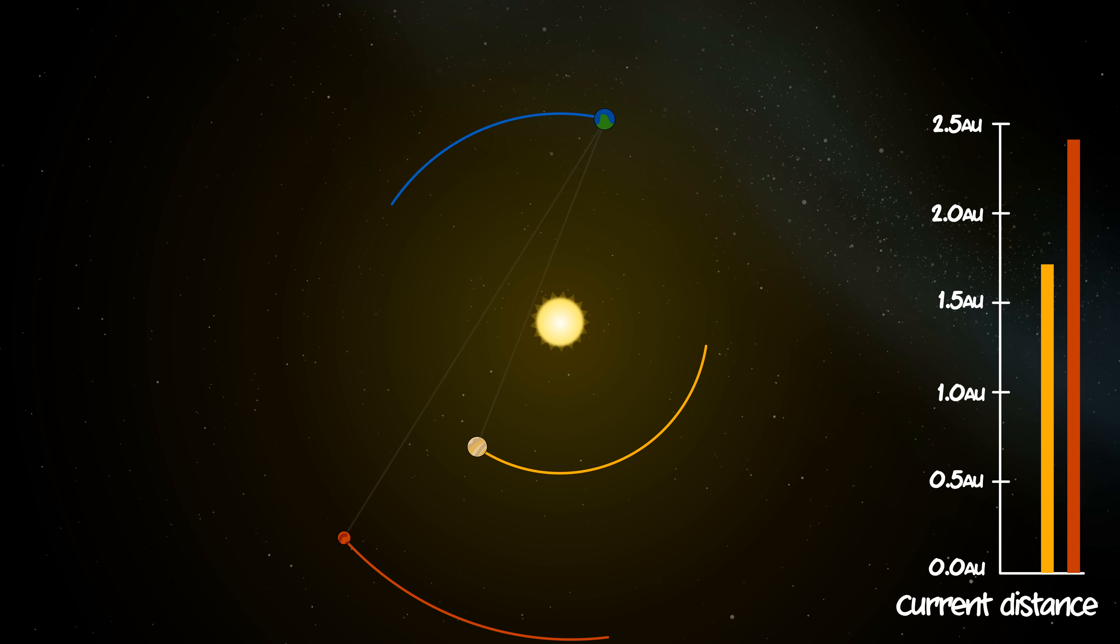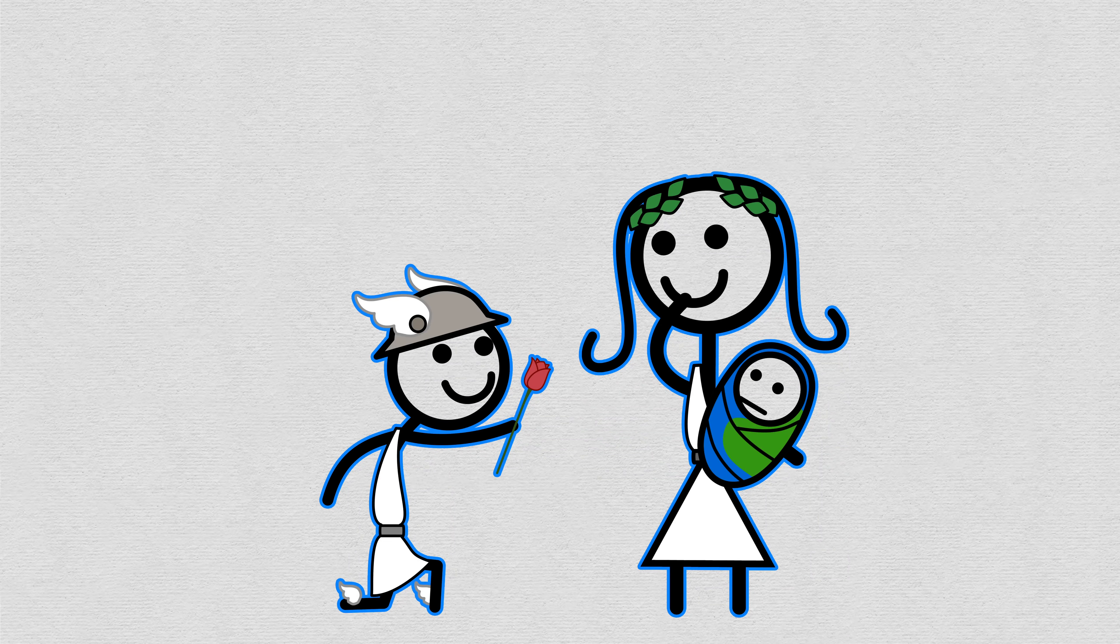When Mars and Venus are both on the other side of the Sun, it leaves little Mercury the closest. Each of Earth's inner three-planet friends are, at one time the farthest and the closest. And Mercury, with his smallest orbit, makes him never that far from Earth, at least on planetary scales, giving the little guy a uniquely close relationship with Terra.